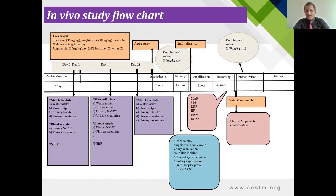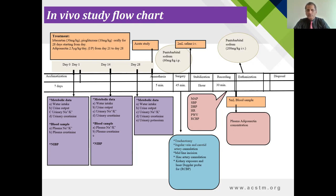The treatment started with irbesartan at 30 mg per kg, pioglitazone at 10 mg per kg, orally for 28 days starting from day one. Adiponectin was given at 2.5 microgram per kg per day starting from day 21 to 28. We took seven days for acclimatization of the animals. Before that, we collected all metabolic data in terms of water intake, urine output, urinary sodium-potassium ratio, and blood samples were also measured.